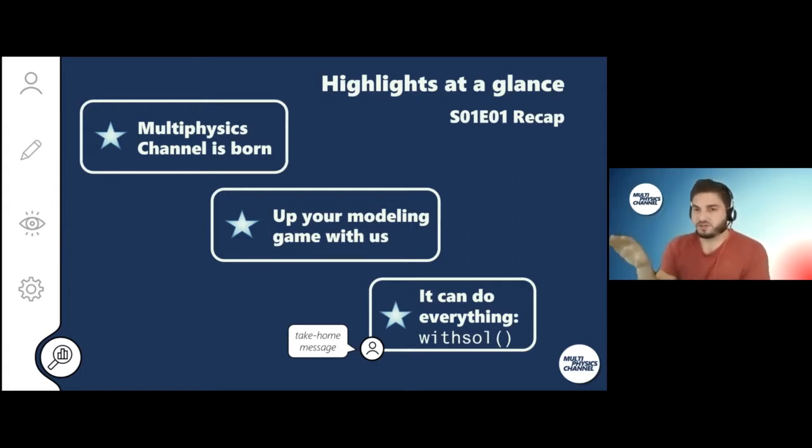For example, when you want to couple together two parametric sweeps which are located in two separate studies. If one study has a parametric sweep and you want to run the second study for every item that was in that parametric sweep variable, you can couple those two with a withsol operator and the rounding variable as well. That works very neatly.